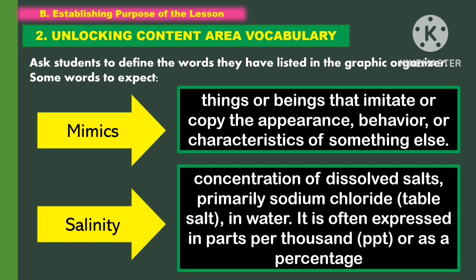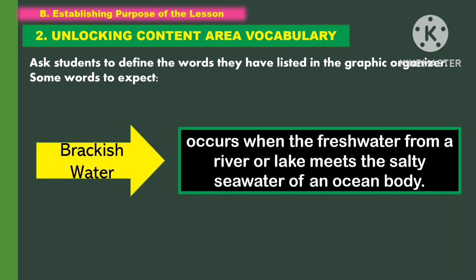Another word is mimics — these are things or beings that imitate or copy the appearance, behavior, or characteristics of something else. Another word is salinity — it is the concentration of dissolved salts, primarily sodium chloride or table salt, in water, often expressed in parts per thousand (PPT) or as a percentage. Another word is brackish water — it occurs when the fresh water from a river or lake meets the salty seawater of an ocean body.